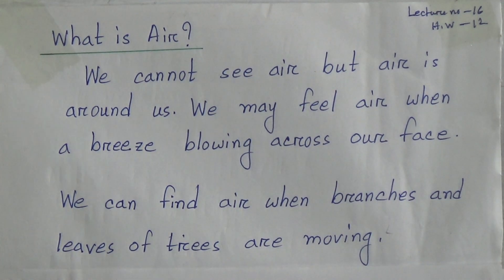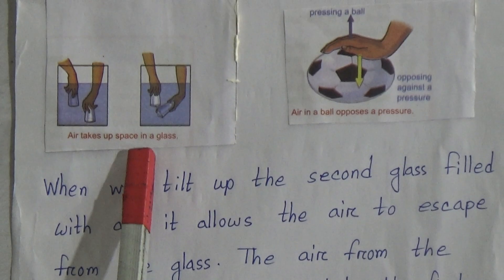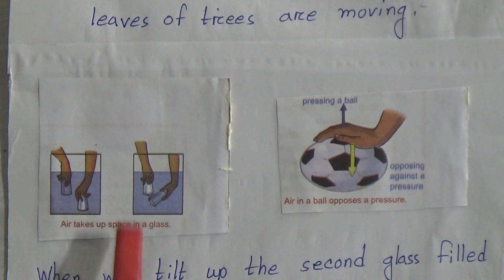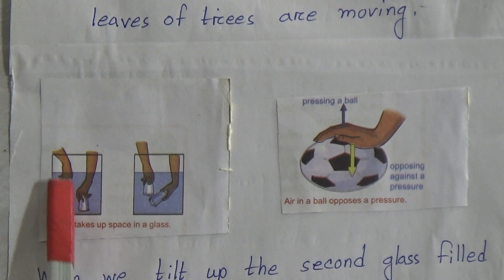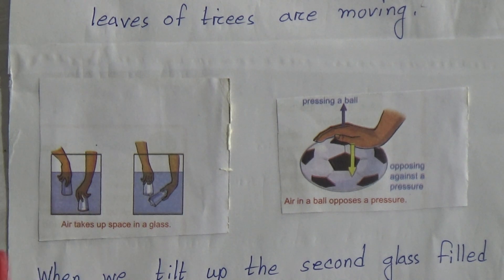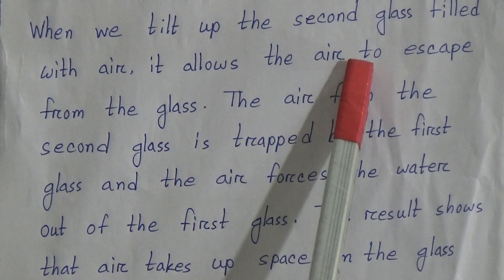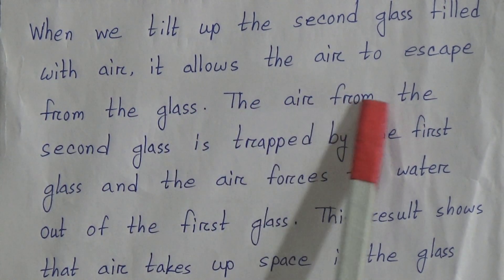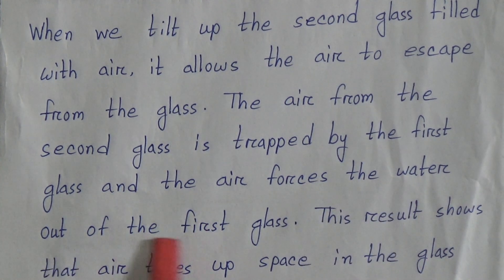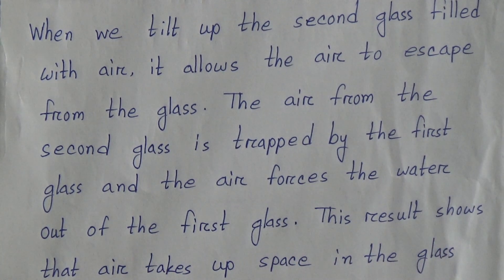In our science book on the next page, there is an experiment: air takes up space in a glass. For this experiment, you need two glasses. Let one glass be full of water and another glass full of air. When we tilt up the second glass filled with air, it allows the air to escape. The air from the second glass is trapped by the first glass, and the air forces the water out of the first glass. This shows that air takes up space in the glass instead of water.